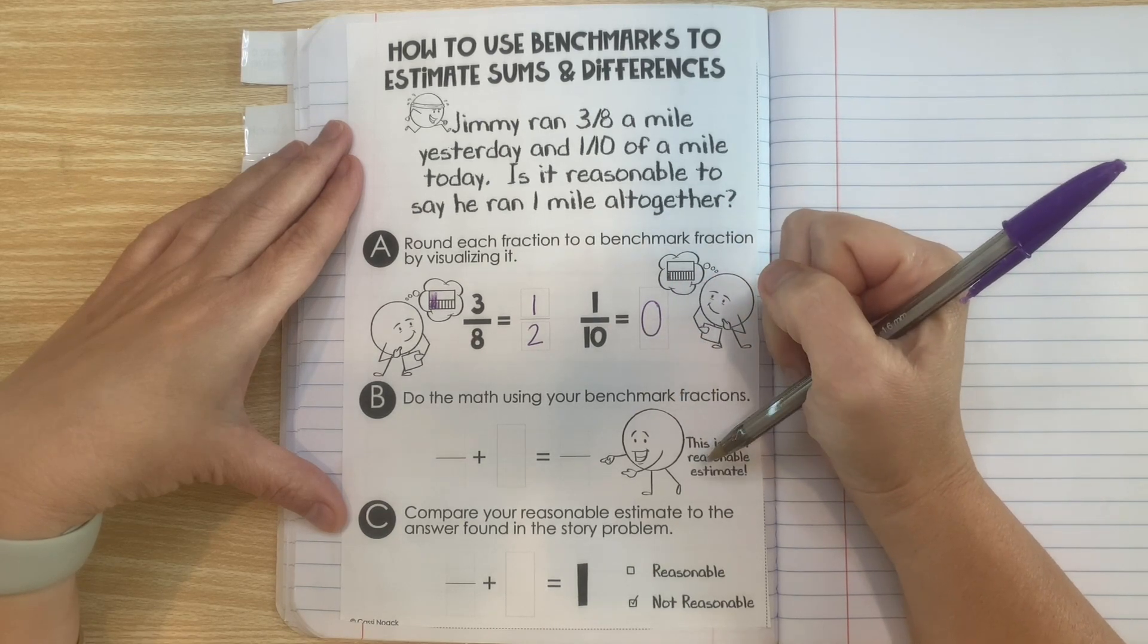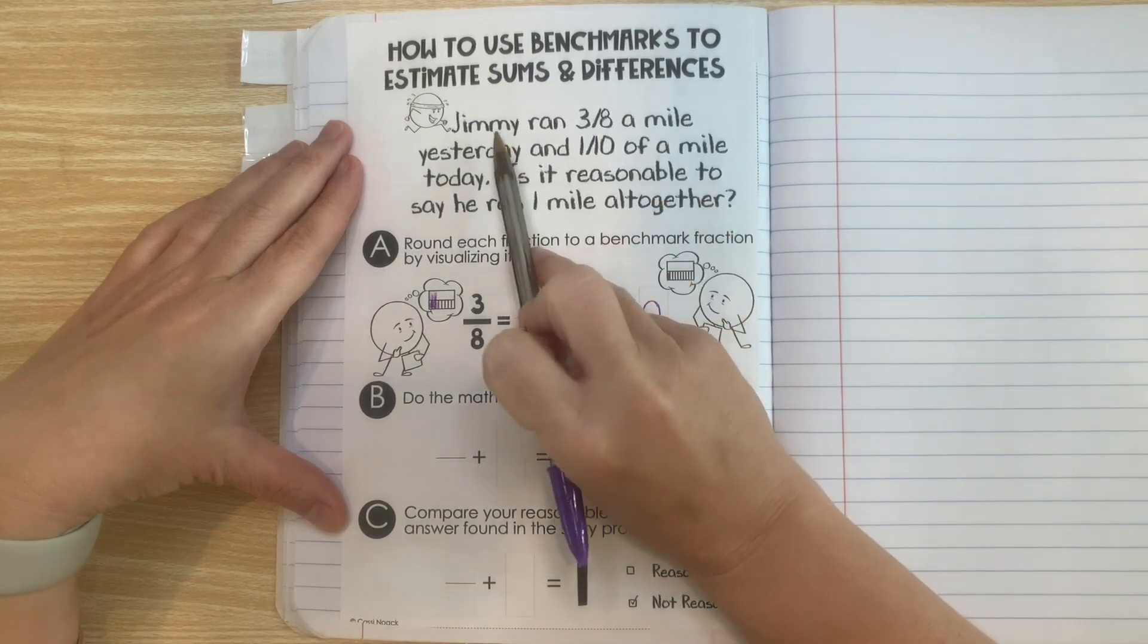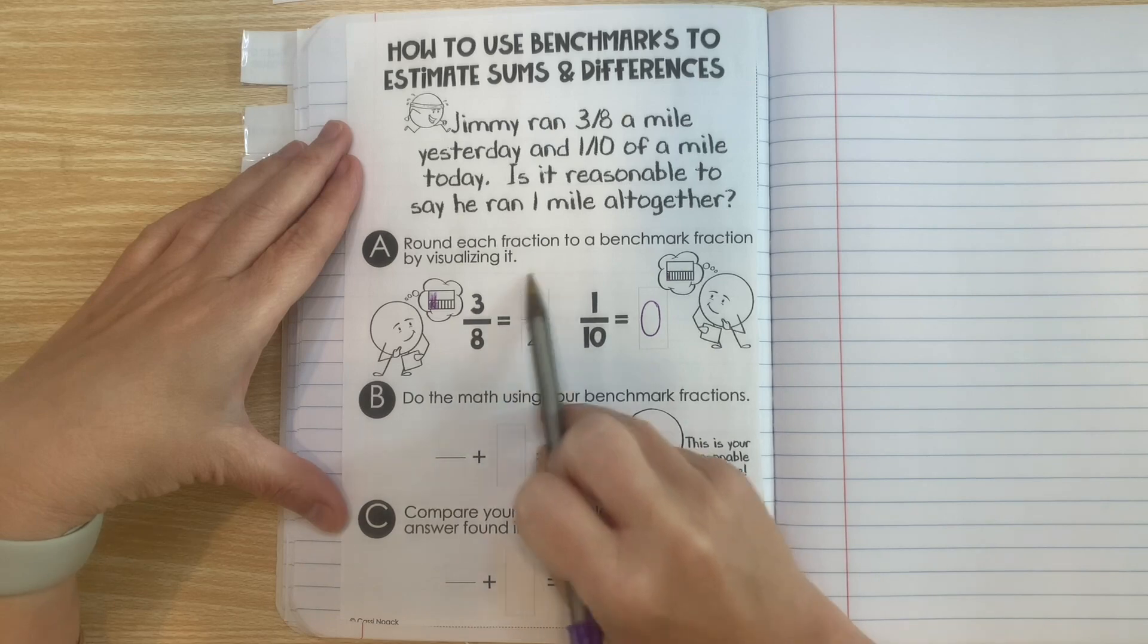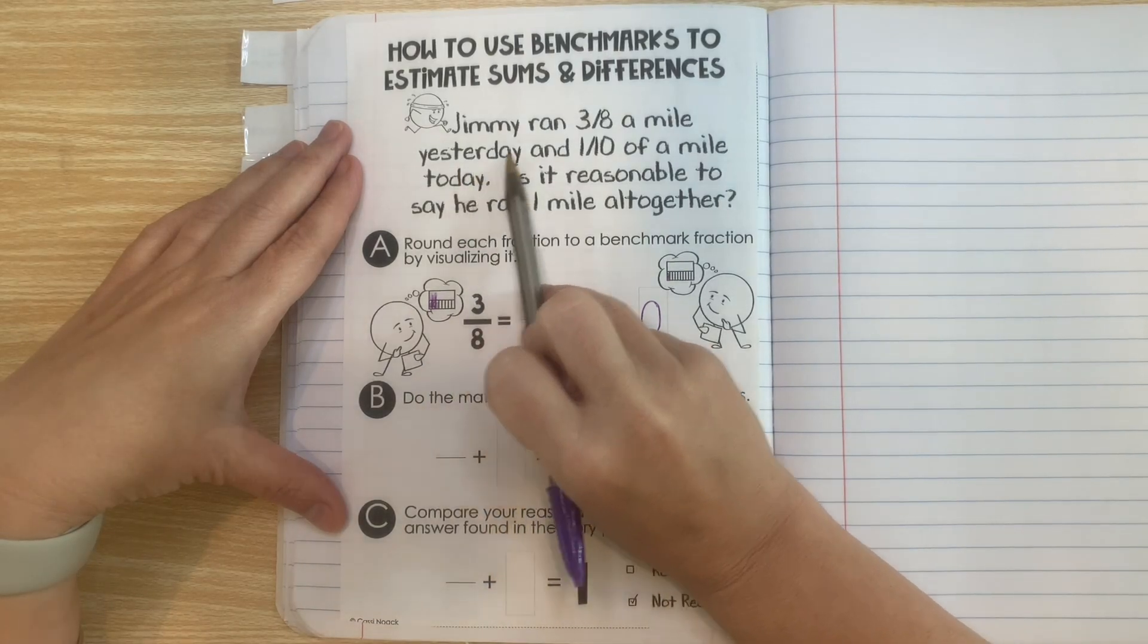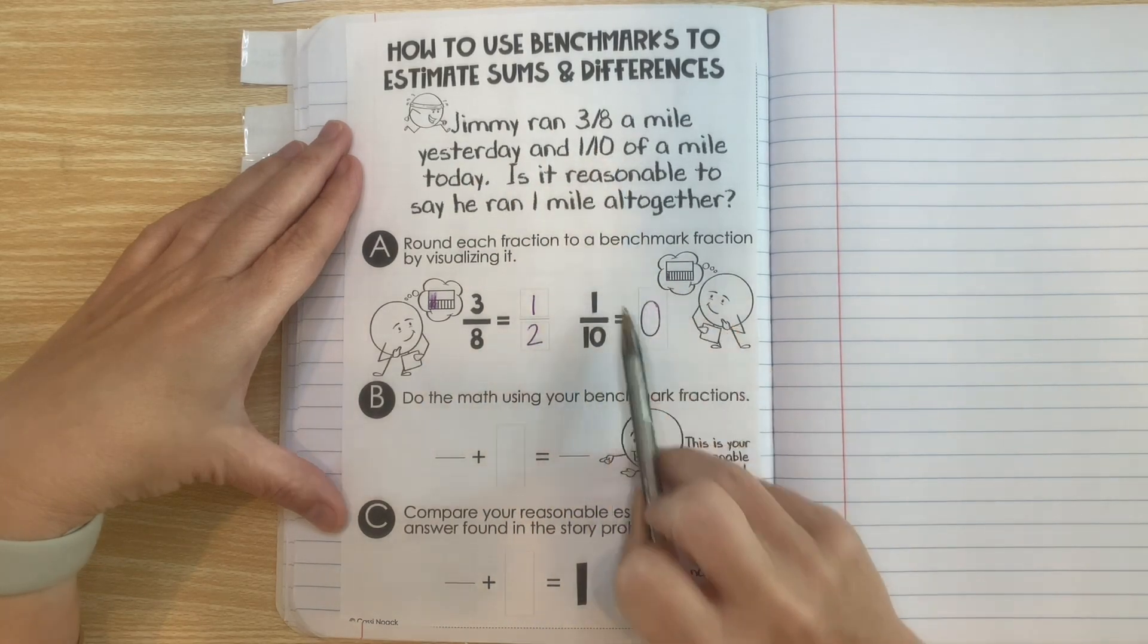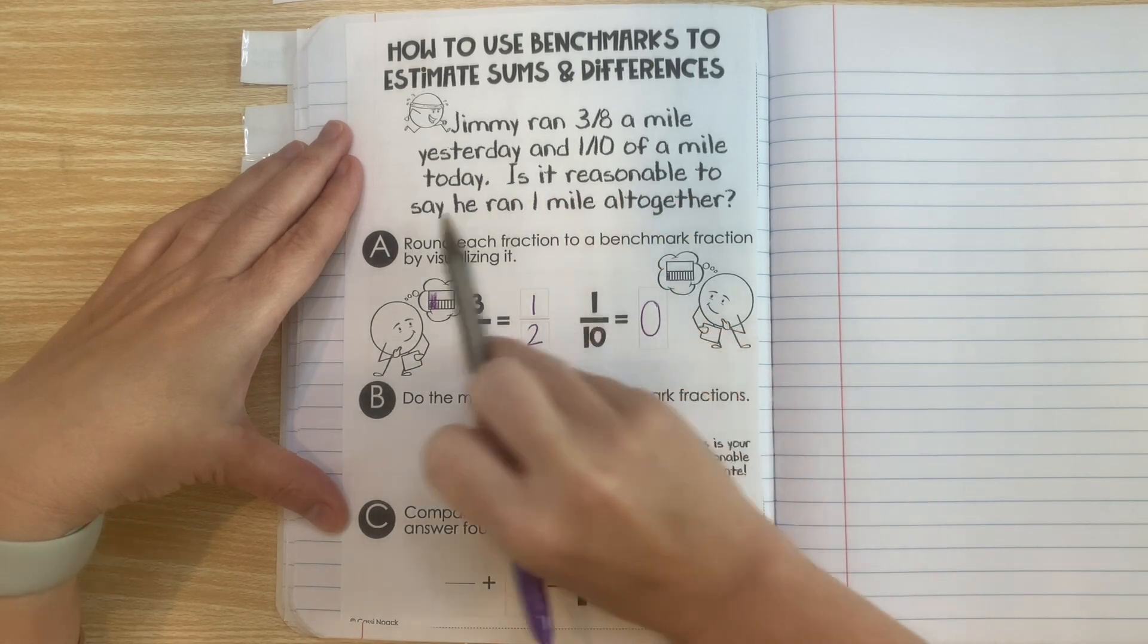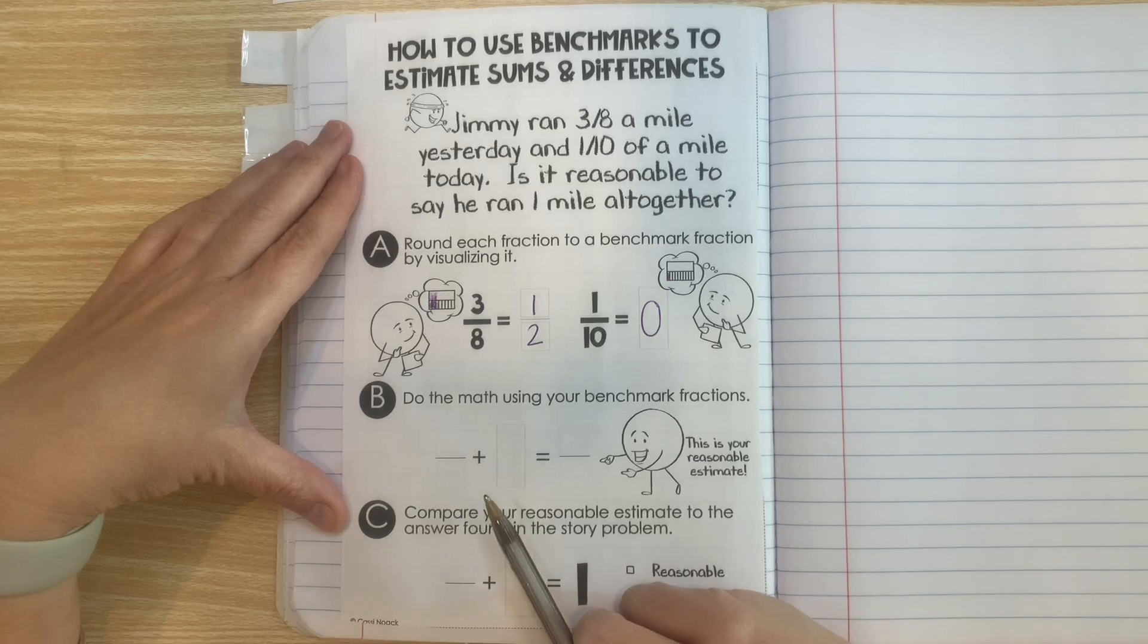So now let's do some math. Remember, we were saying that Jimmy ran three-eighths. So he ran about a half on yesterday and one-tenth today. So today he did not run very much. He barely ran anything. So is it reasonable to say he ran one mile altogether?